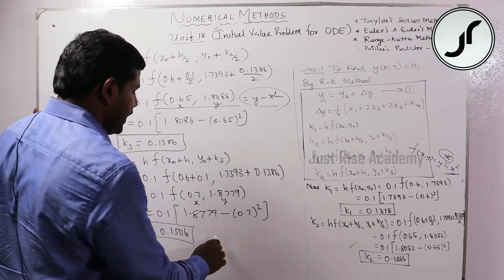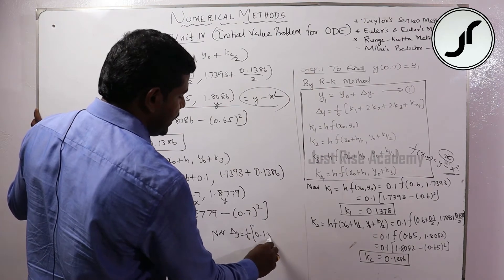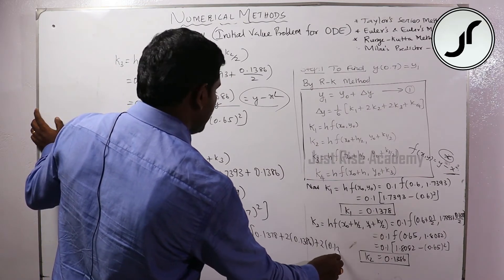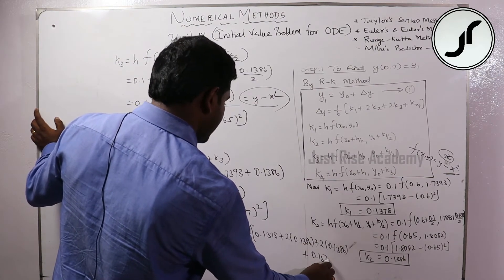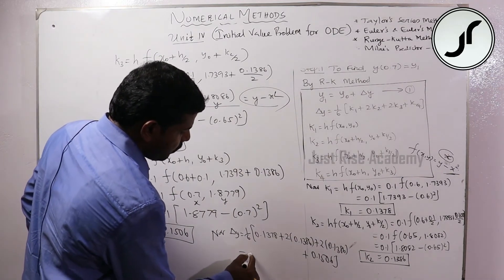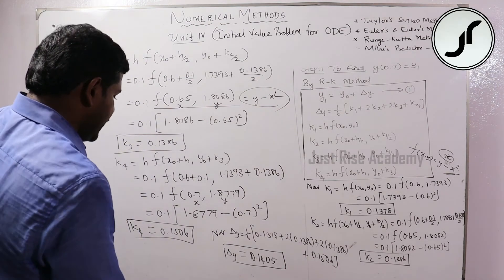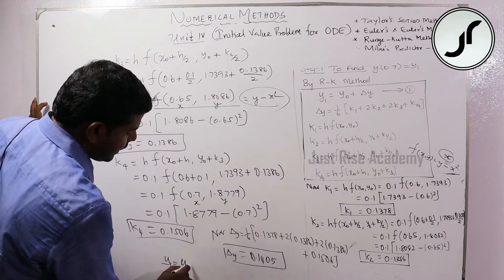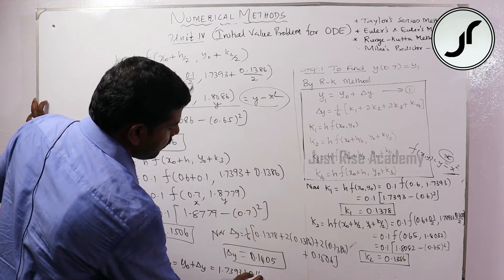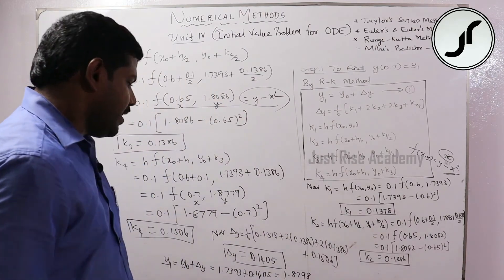Now delta_y equals 1/6 into (k1 plus 2k2 plus 2k3 plus k4): 0.1378 plus 2 into 0.1386 plus 2 into 0.1386 plus 0.1506. Calculating 1/6 into that sum gives delta_y equals 0.1405. Therefore y1 equals y0 plus delta_y equals 1.7393 plus 0.1405 equals 1.8798. This is y(0.7).